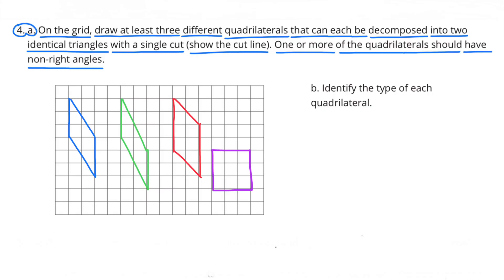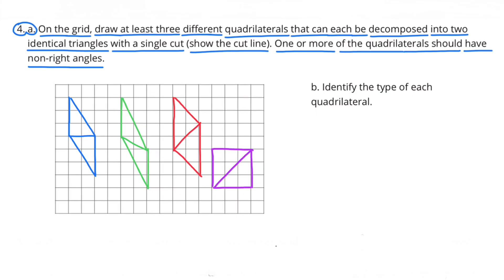I've come up with four examples. The first three don't have right angles, and the square does have right angles. I can decompose these into identical triangles with a single cut line.